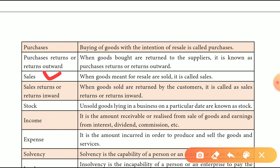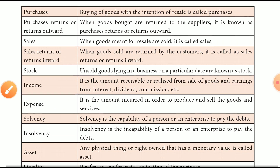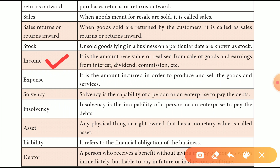The next part is Sales — what we call selling goods. The next part is Stock. The next part is Income.